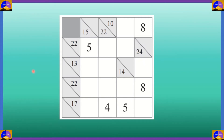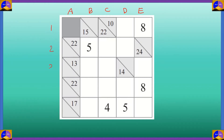This is our first question. Let's name the columns and rows. This will be column A, column B, column C, column D and column E. And the rows are row 1, row 2, row 3, row 4 and row 5.